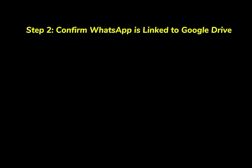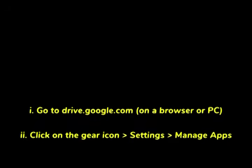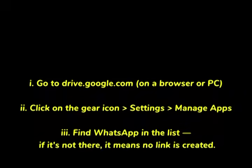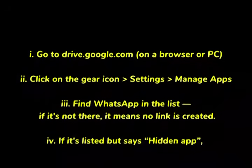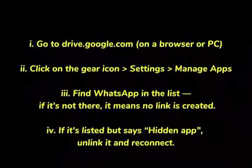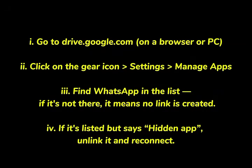The second thing to check is whether your WhatsApp is linked to Google Drive or not. You need to go to your browser or PC and type drive.google.com. There you will see a gear icon — click on Settings, then go to Manage Apps, and look through the list to find WhatsApp. If you don't see WhatsApp listed, it means no link has been created. If it is listed but says 'hidden app', you need to unlink it and reconnect it again.